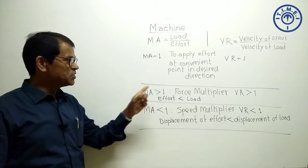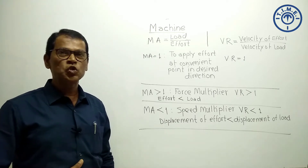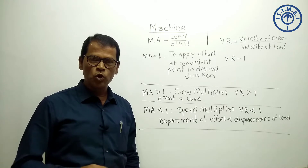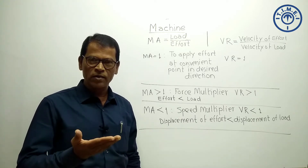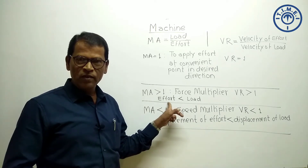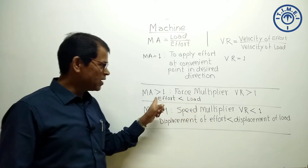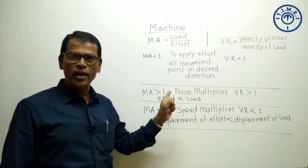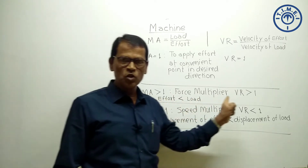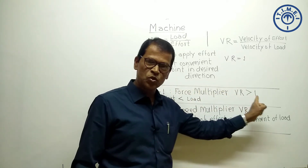If mechanical advantage is greater than 1, it means the machine is mechanically advantageous to us. For example, in a jack, the driver applies a little force to lift a heavy car — the effort applied is less than the load. So when mechanical advantage is greater than 1, the machine works as a force multiplier, and accordingly velocity ratio is also greater than 1.